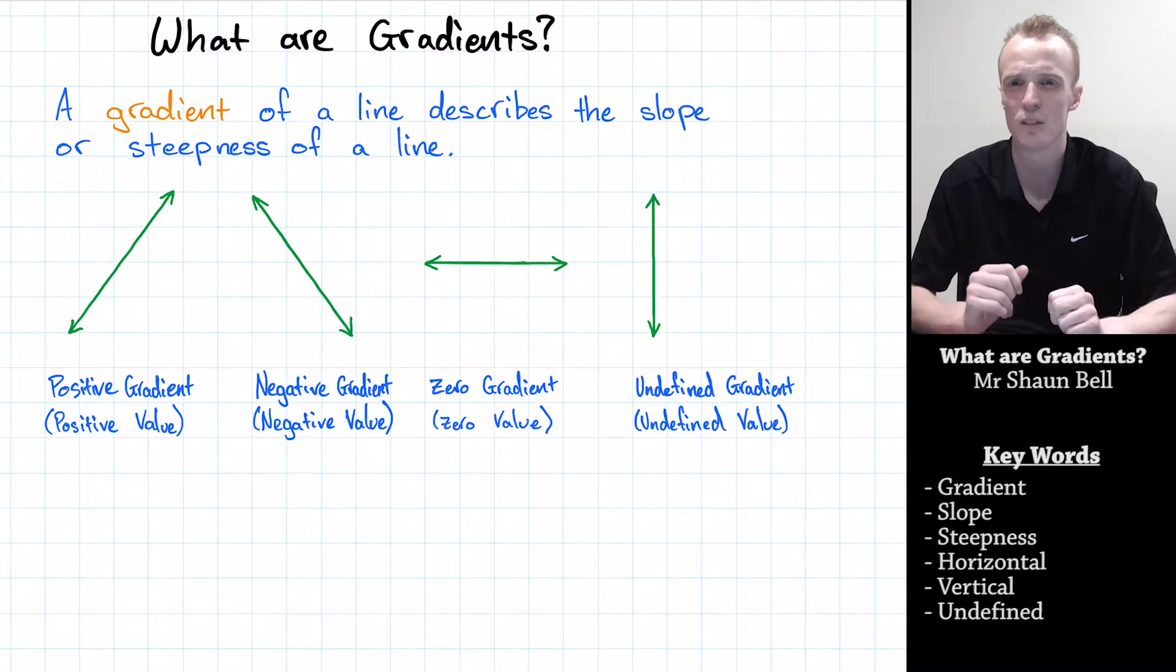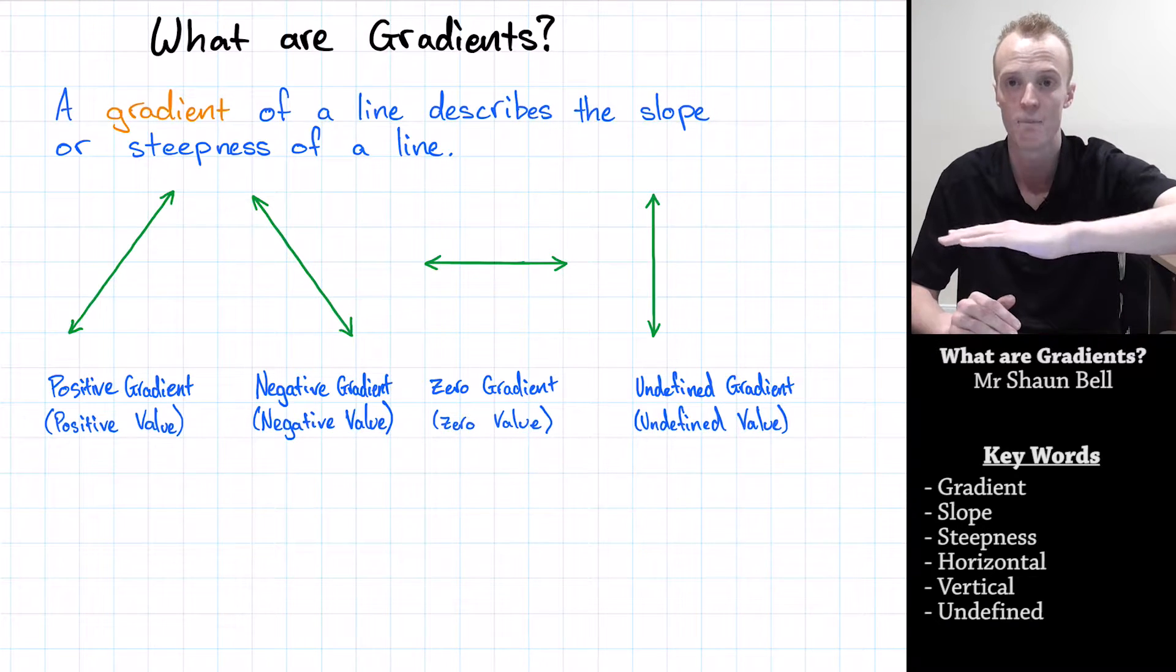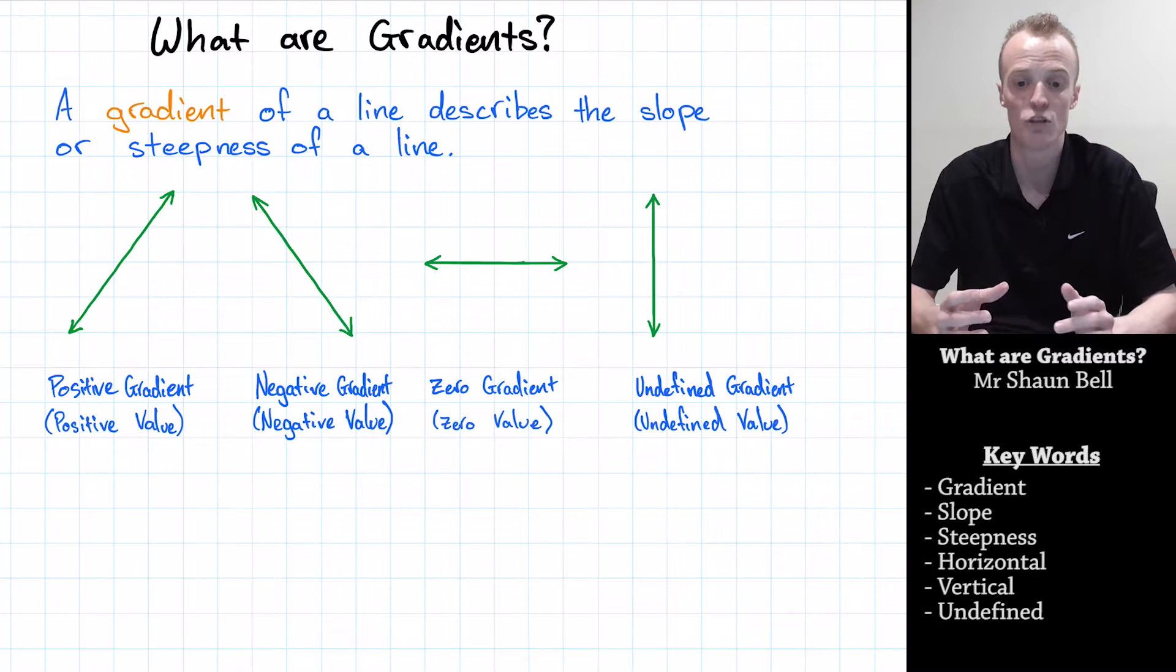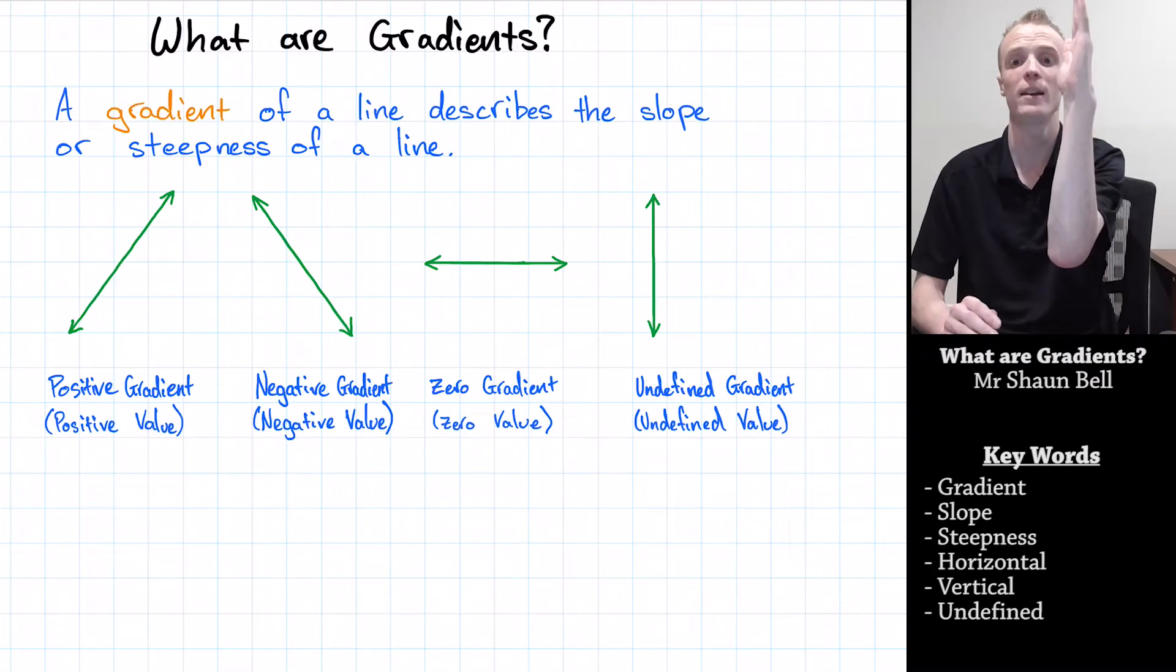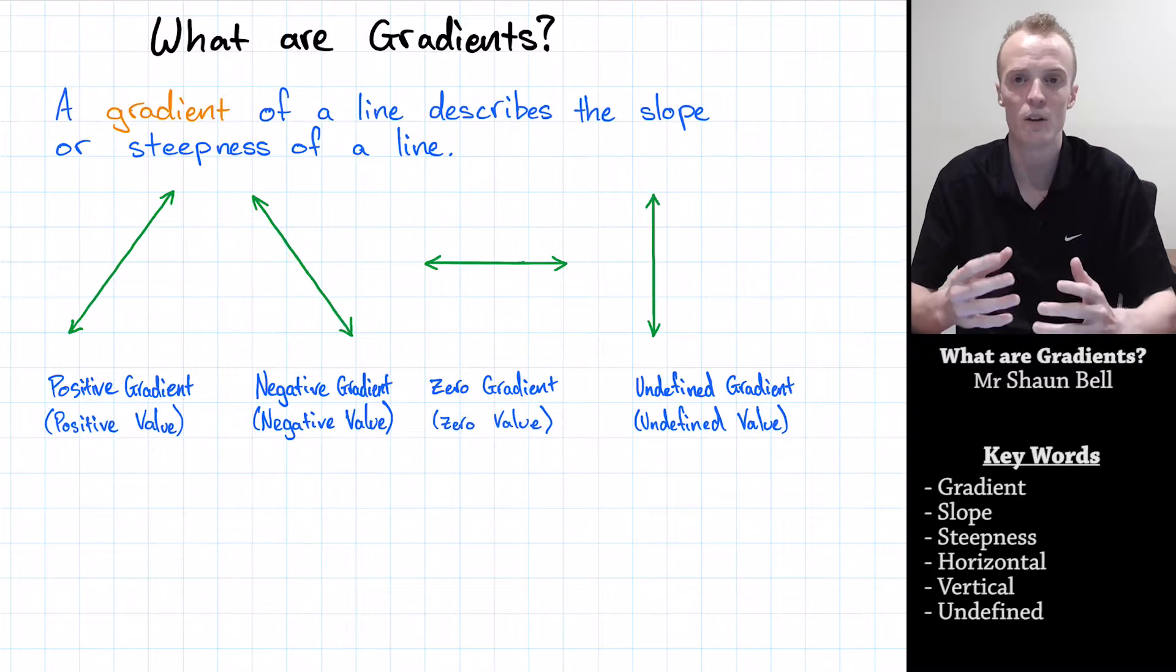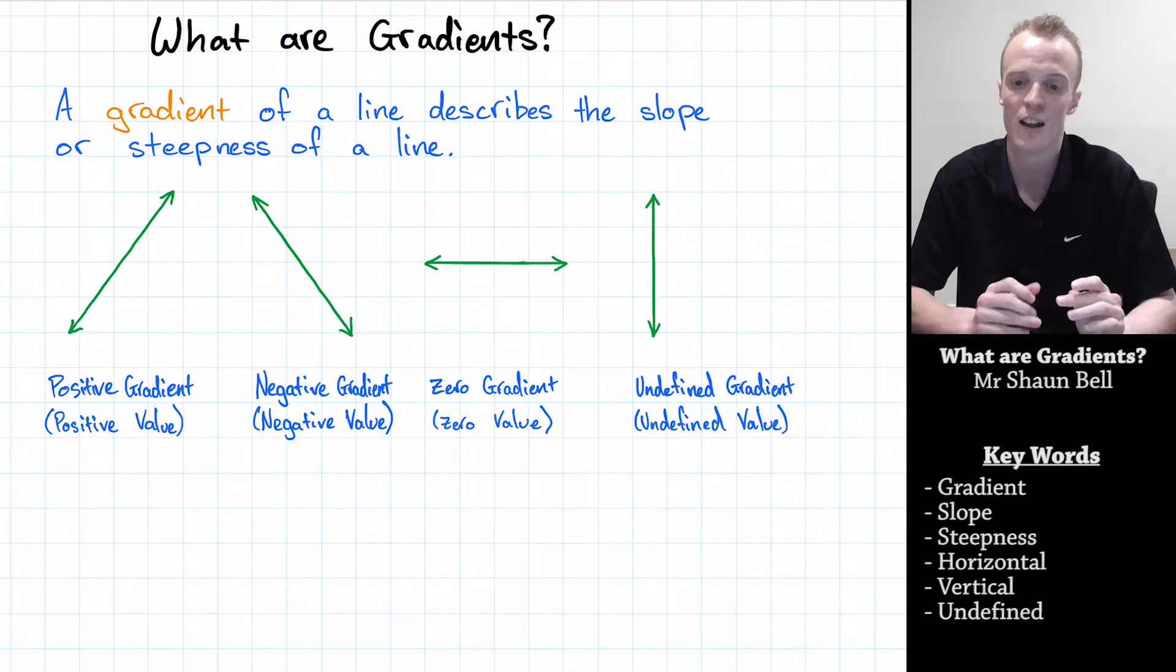There are two special situations. What if it's not going up or down, but perfectly flat? We call these a neutral gradient or zero gradient, and the value we give it is zero. And finally, what if it's going straight up and down, vertical? We call this special situation an undefined gradient, and if we're going to give it a value, we call it an undefined value.